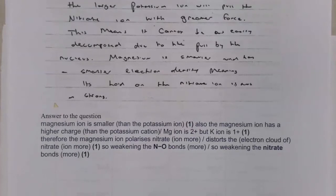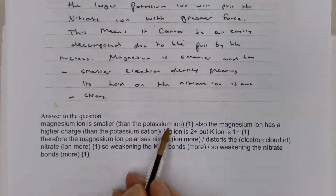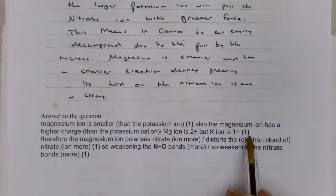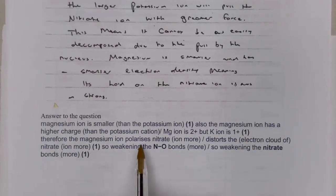So this was an old exam question and this is the mark scheme for it. So notice where the marks are given. So you have one mark for saying that the magnesium ion is smaller than the potassium ion. I'd always include that comparison. It has a higher charge than potassium. That's your second mark. Therefore, it polarises the nitrate ion more or distorts the electron cloud of the nitrate ion more. That's your third mark. It's generally speaking this fourth mark that students miss out. And that's what happened in the first answer. It weakens the NO bonds or it weakens the nitrate bonds more. You need to be specific about which bonds it is actually weakening.